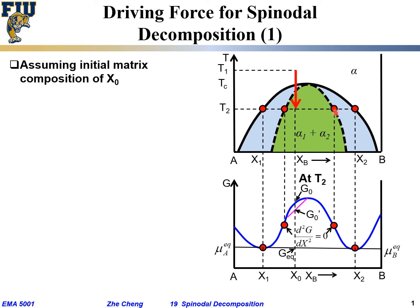Within the two inflection points we have a concave down region, and this is where we experience spinodal decomposition. Outside the inflection points, between the inflection points and the common tangent line, we would go through nucleation and growth. Outside the common tangent line we are in the single-phase region.